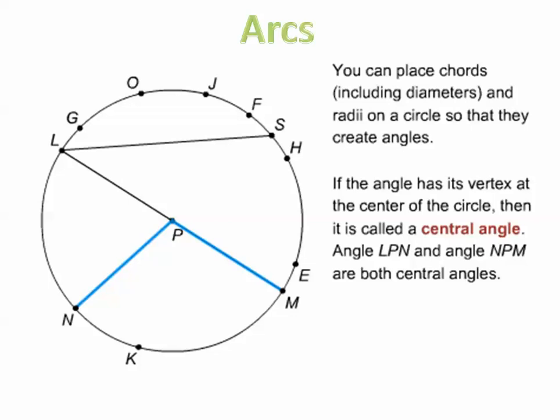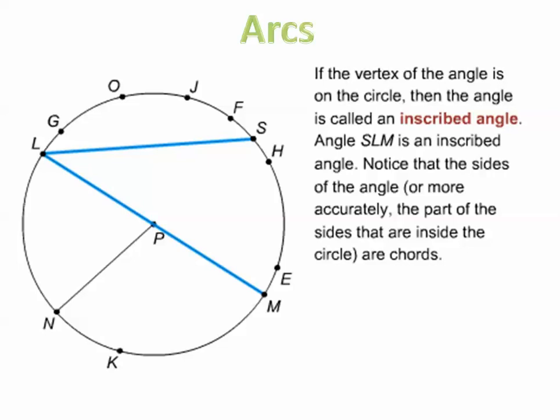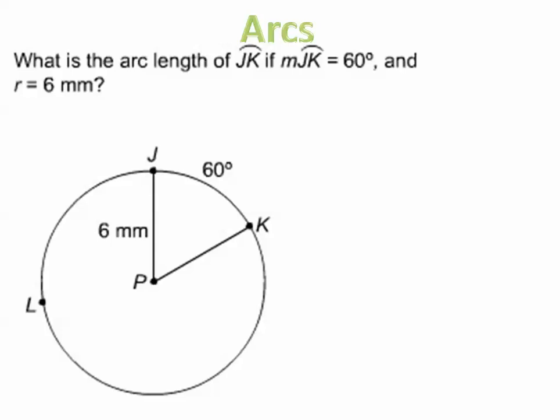You can place chords, diameters, and radii on a circle to create angles. If the angle's vertex is at the center of the circle, it's called a central angle — for example, angles LPN and NPM are central angles. If the vertex of the angle is on the circle, it's called an inscribed angle — for example, angle SLM is an inscribed angle. Note that the sides of an inscribed angle that lie inside the circle are chords.